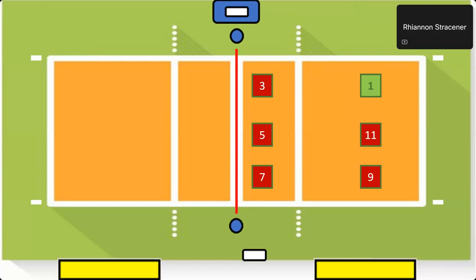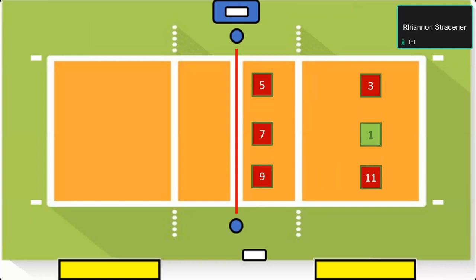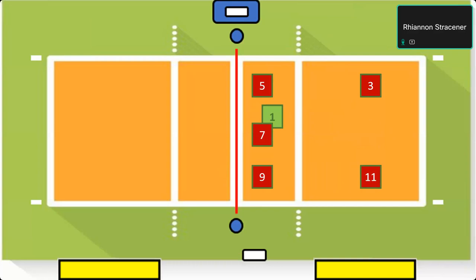Now let's rotate. Number 1, our setter, is in the middle now. Their opposite is still number 7. Just like before, number 1 wants to be as close to setter position as possible, so we're going to have them pull up — pushing up number 7. Number 1 needs to be slightly behind number 7; number 7 has to be closer to that center line than number 1. Now we've got a big hole in the middle, so there are a couple of different ways to fill it in.